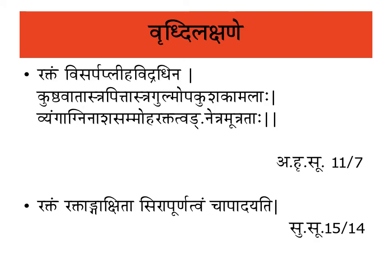Nav Rakta Vriddhi Lakshan — manifestation of increased Rakta Dhatu. Acharya Sushrut ne kaha hai: Raktam raktanga akshita shira purnatvam cha apadiyati. Ashtanghriday mein bataye gaye: Raktam visarp, pliha, vidradhi. Rakta Vriddhi mein lakshan: first, Raktanga — shariir ke avayavon ka rakta varniiya hona, i.e., general redness of body. Rakta Akshita — netra ka rakta varniiya hona, eyes become blood red. Shira Purnatvam — rakta varniiya shiraon ka uthakar dikhai dena, prominent dikhna aur bhara hua mehsoos hona — vessels become prominent and full.